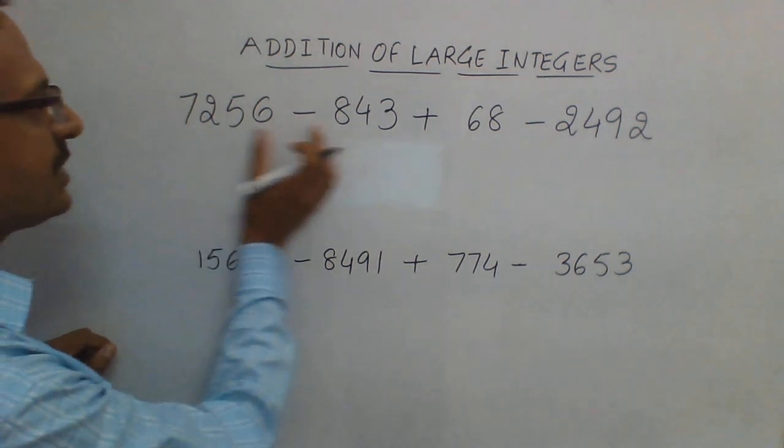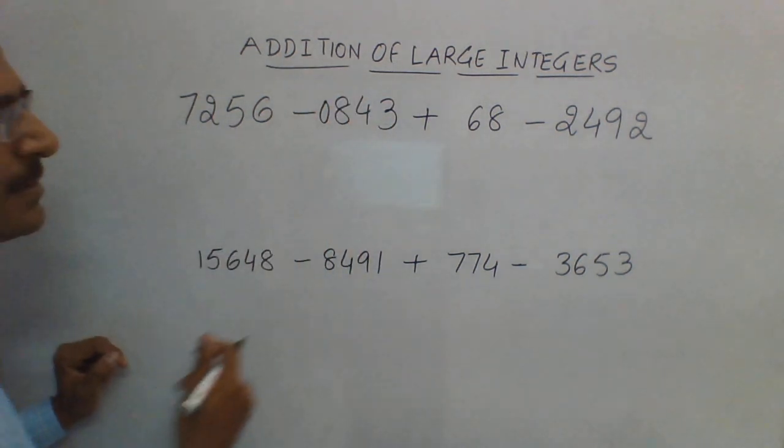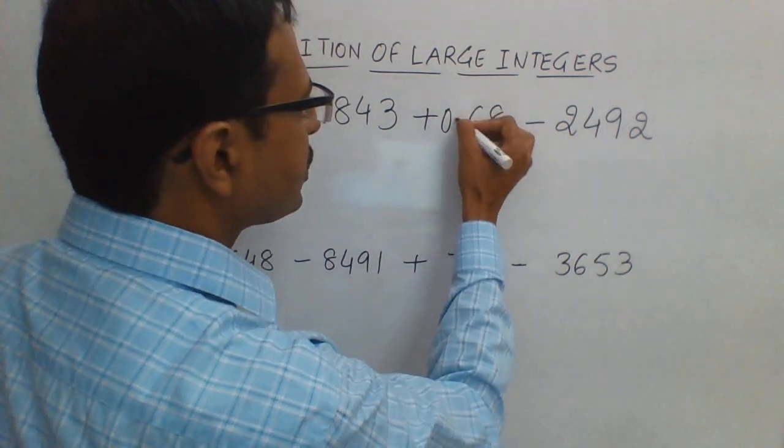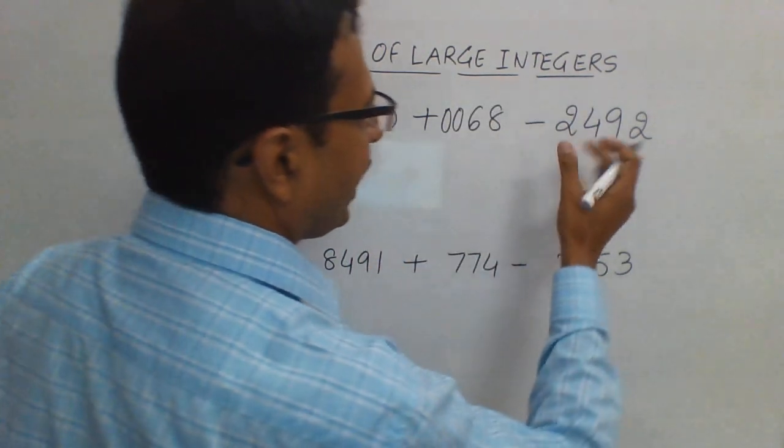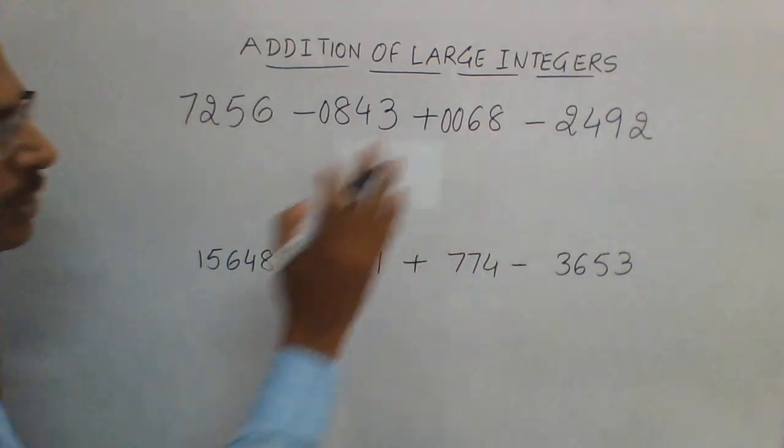This is a 4-digit number, this is a 3-digit number, so I'll prefix a 0 here—doesn't make any difference. Now I'll prefix two 0s here because it becomes a 4-digit number, and here also it's a 4-digit number. Now every number has 4 digits.